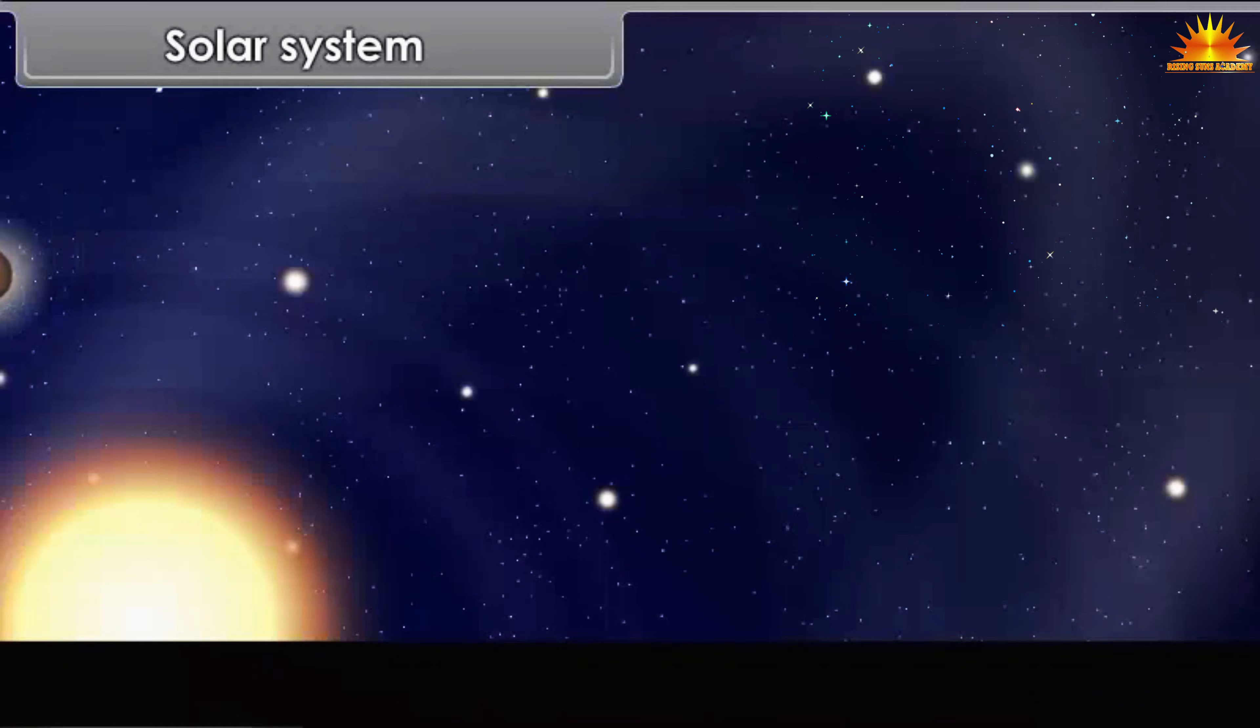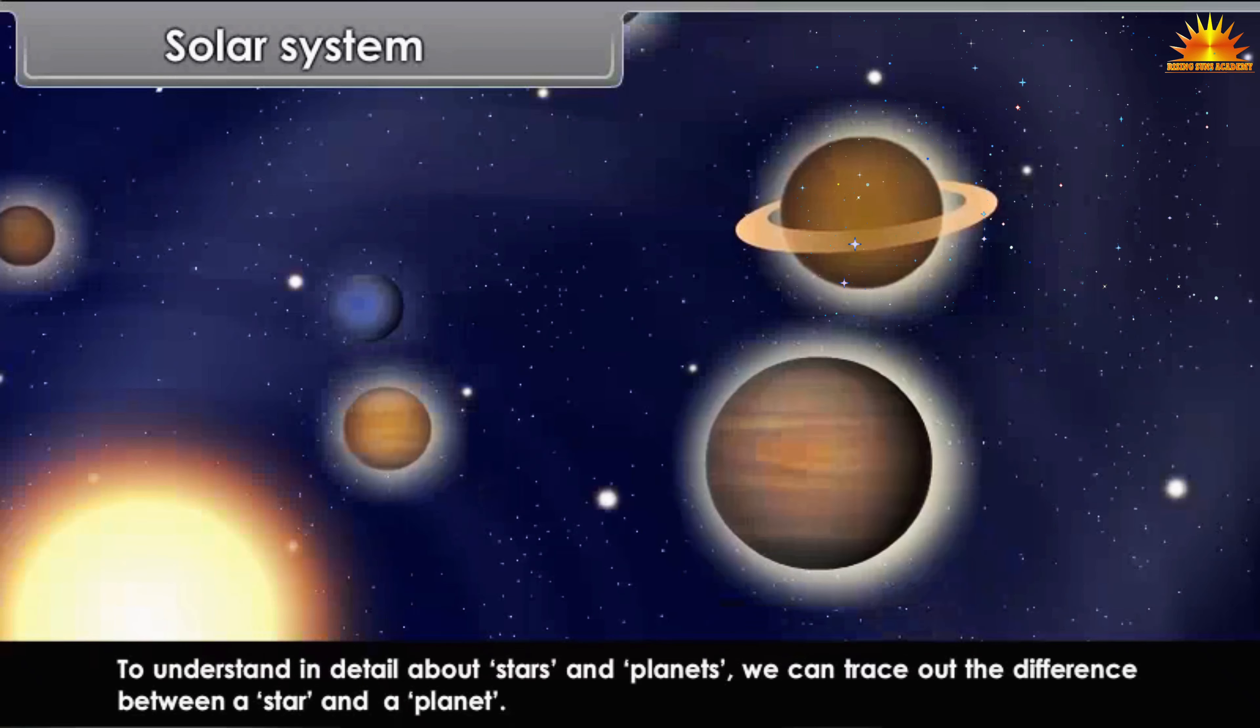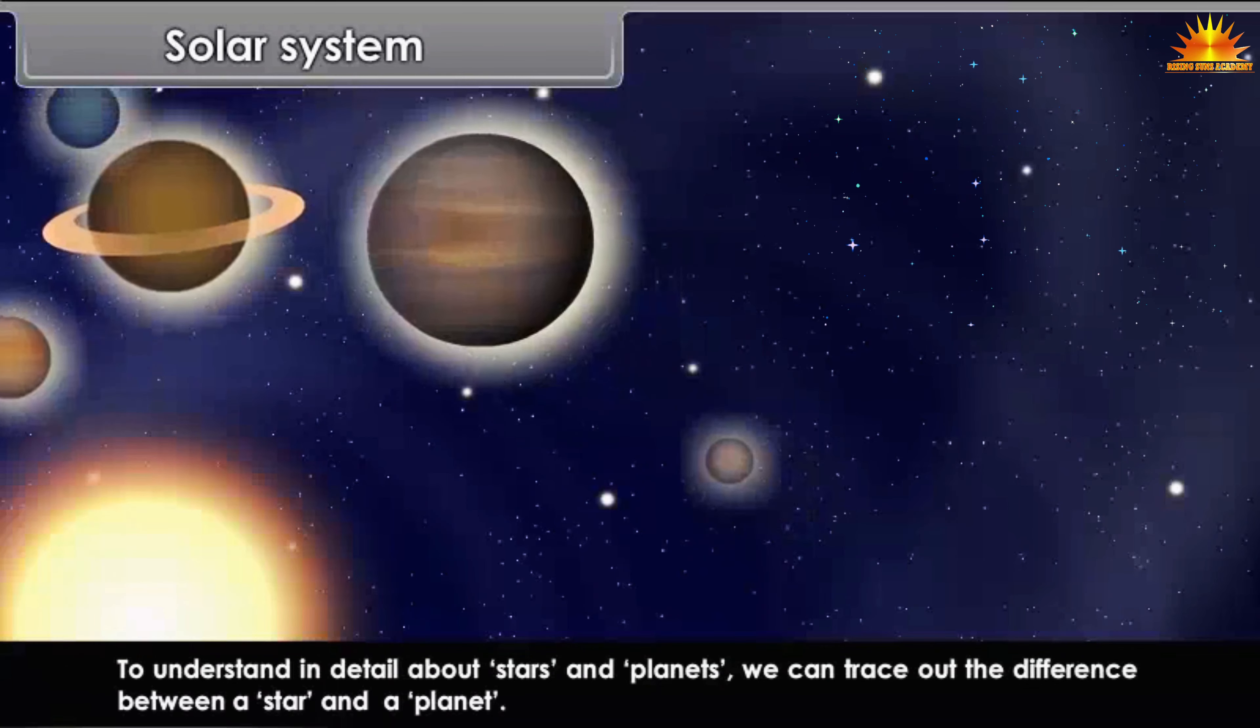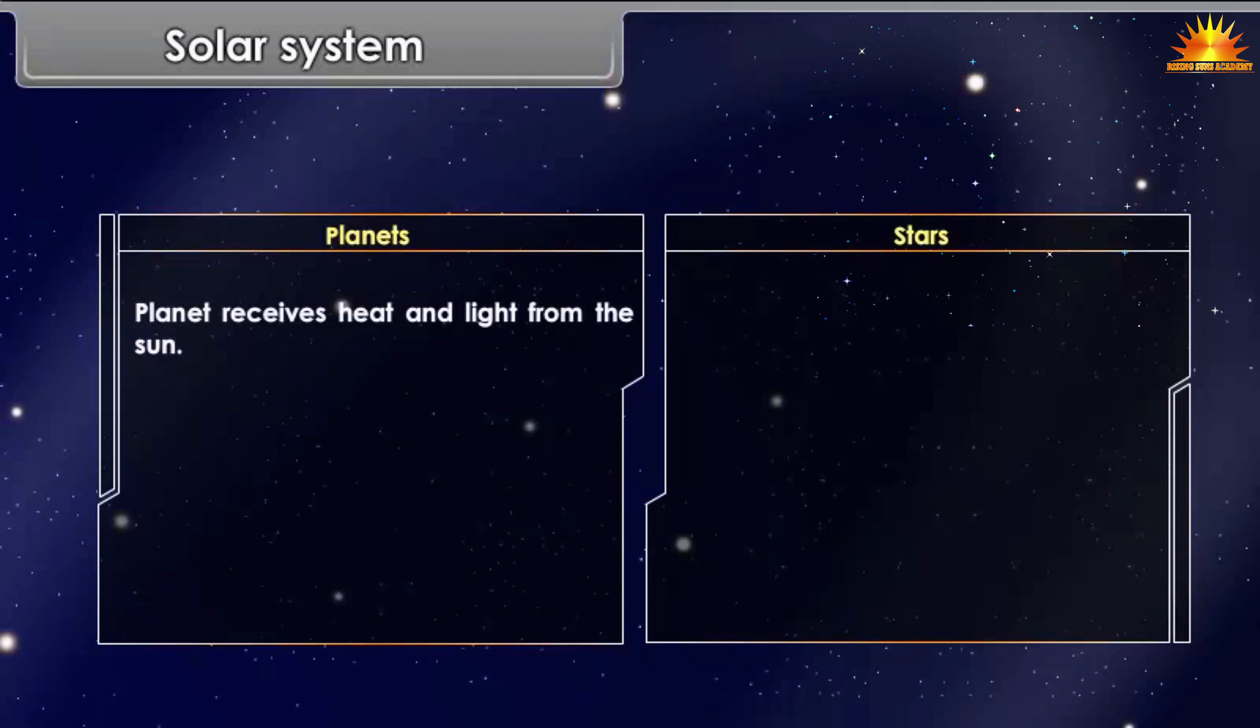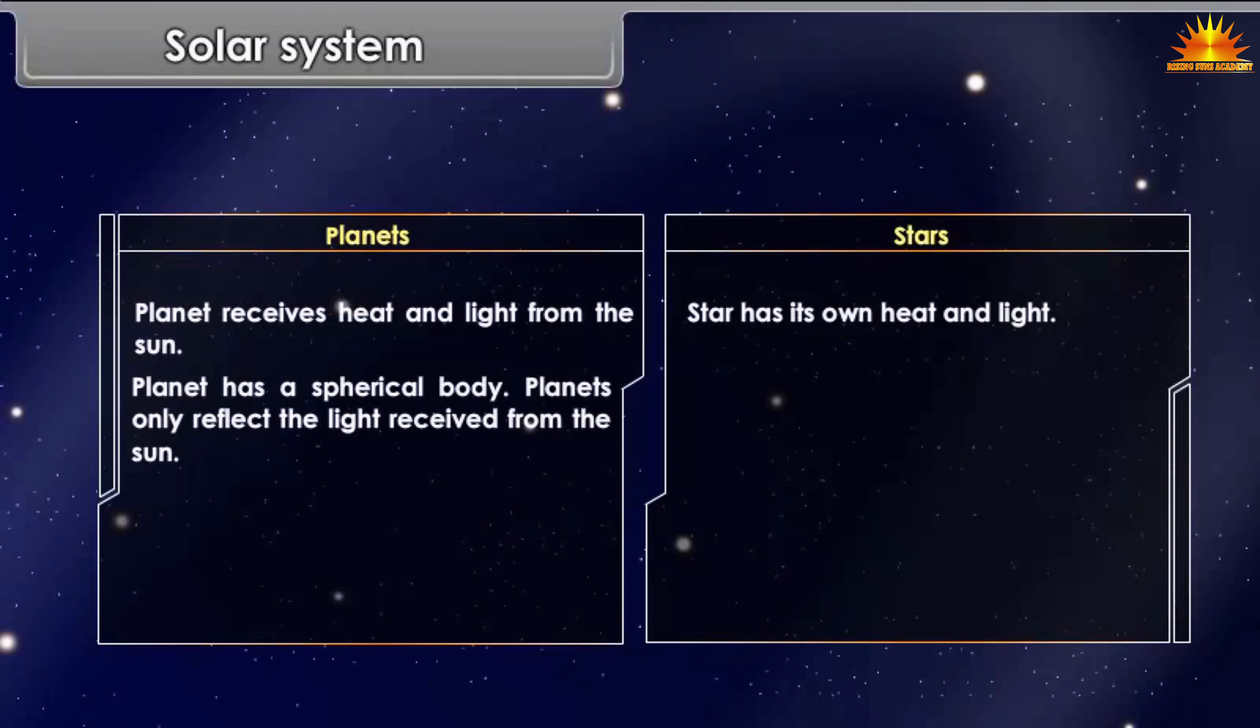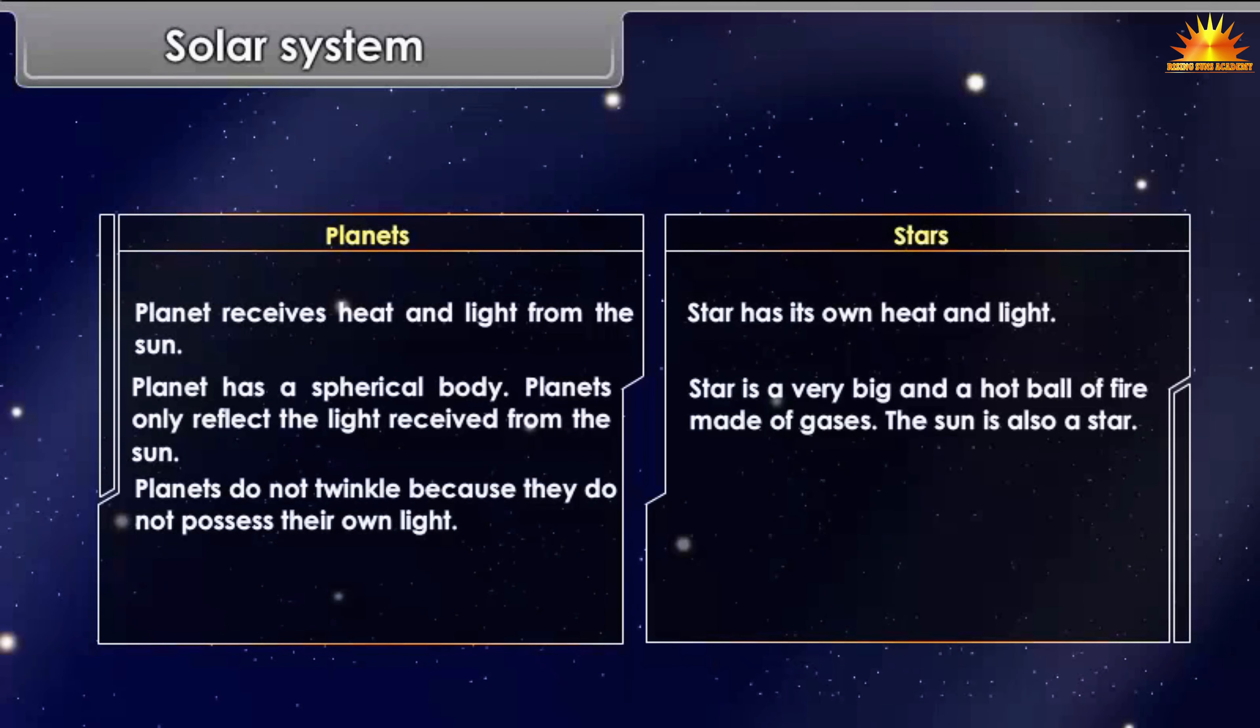To understand in detail about stars and planets, we can trace out the difference between a star and a planet. Planets receive heat and light from the sun. Stars have their own heat and light. Planets have a spherical body and only reflect the light received from the sun. A star is a very big and hot ball of fire made of gases. The sun is also a star. Planets do not twinkle because they do not possess their own light.